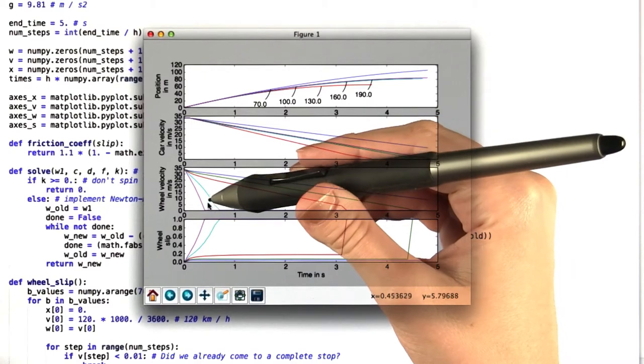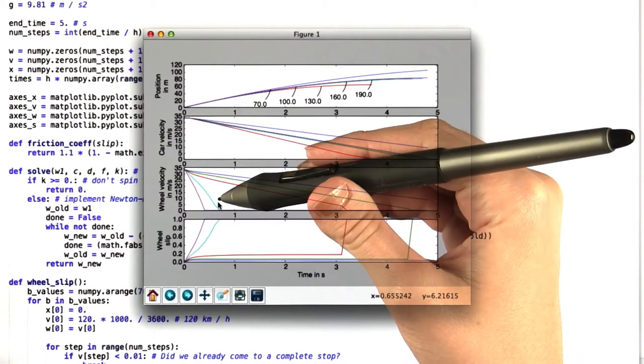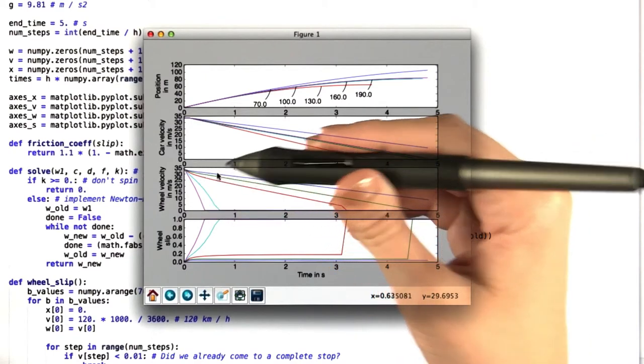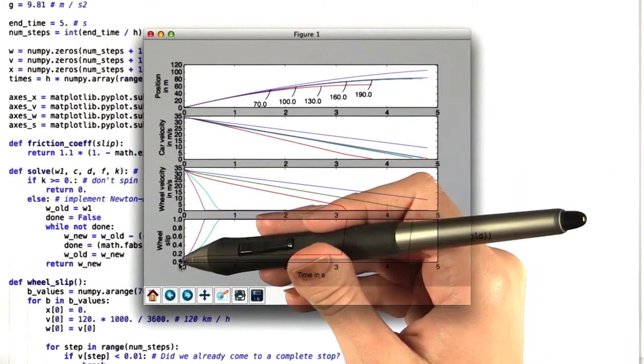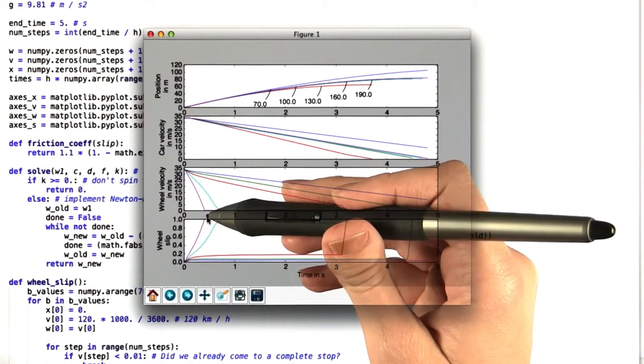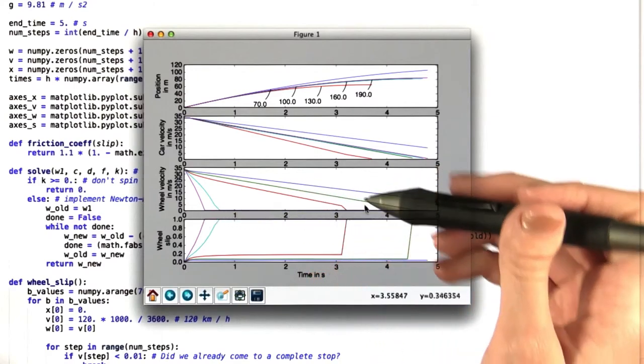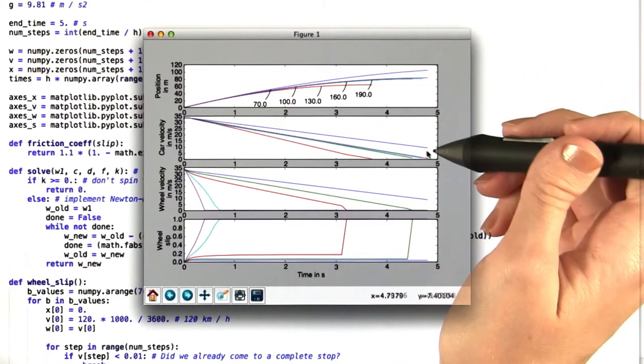When we slam on the brakes really hard, which is shown at the magenta and cyan lines, the wheels stop rotating very quickly. You can see the wheel velocity goes to zero right away. However, in tandem with that, the wheel slip increases dramatically, and the wheels are locked very early on. As a result, the car velocity doesn't actually slow down much.